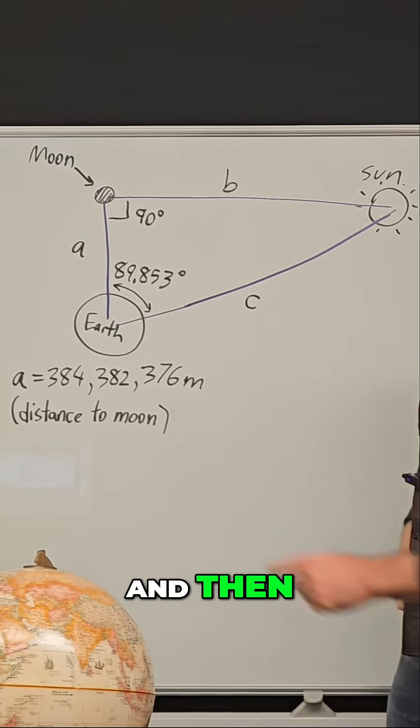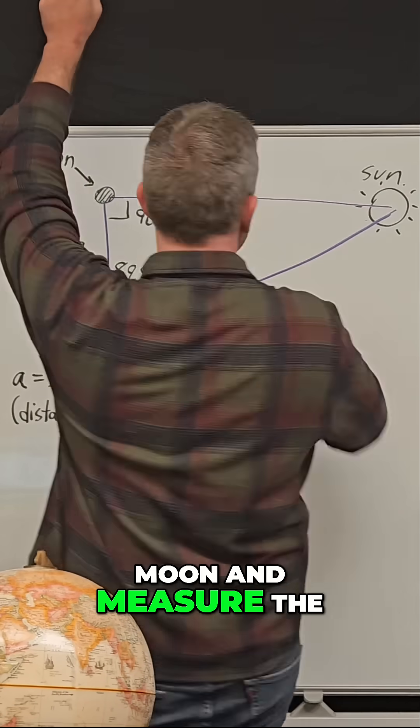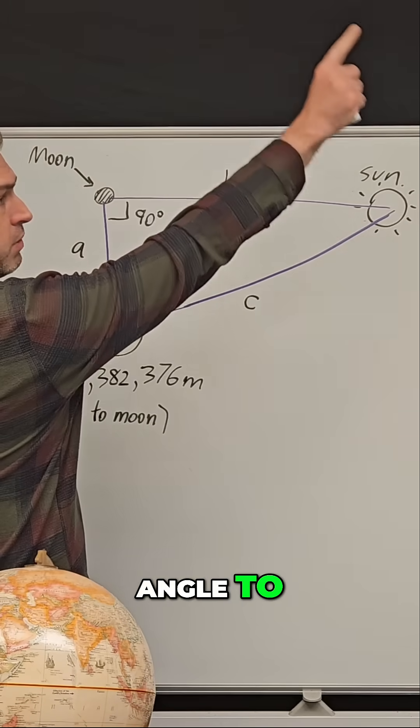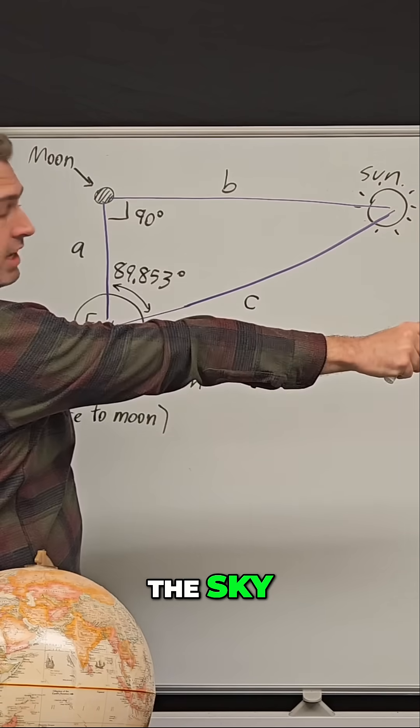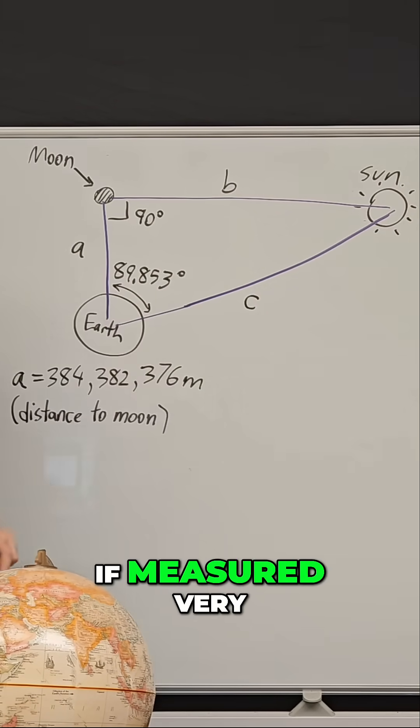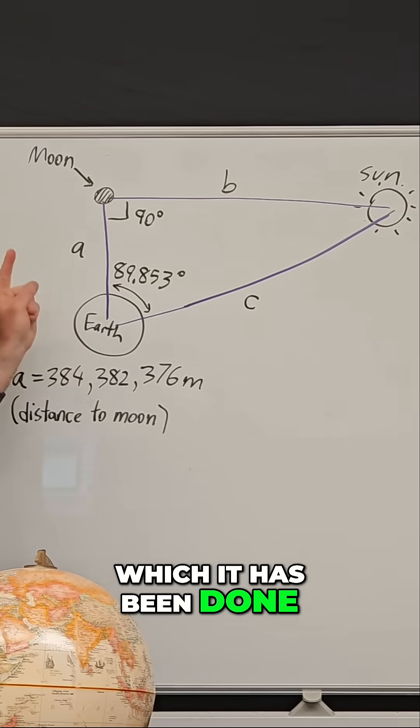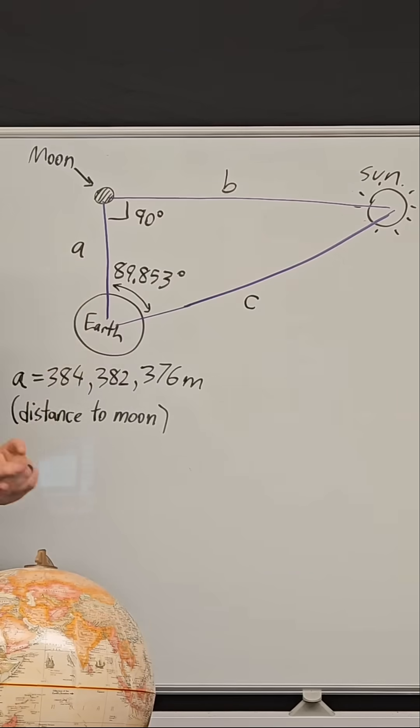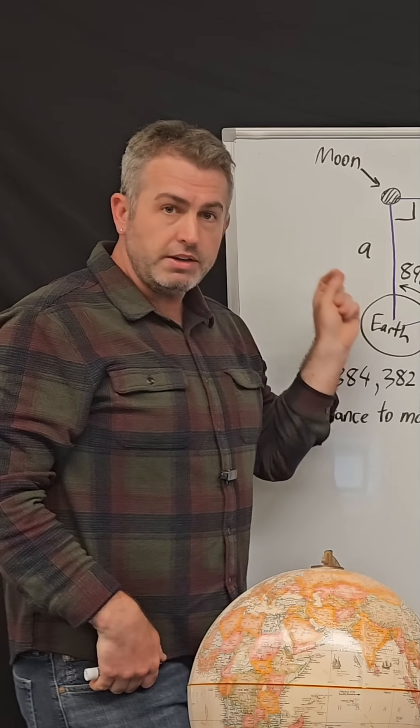If you wait for that moment and then look up at the moon and measure the angle to where you see the sun in the sky, that angle, if measured very carefully, which it has been done, ends up being exactly 89.853 degrees.